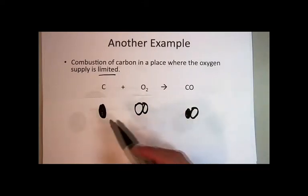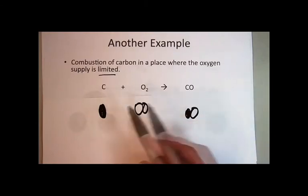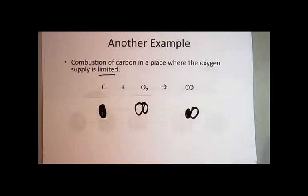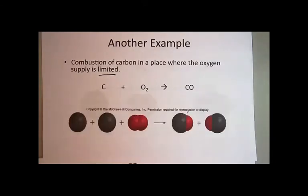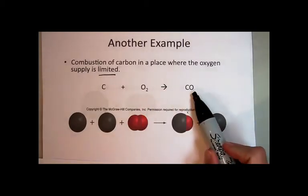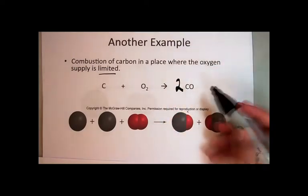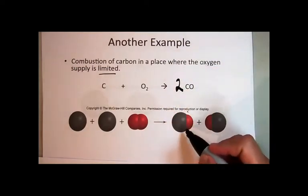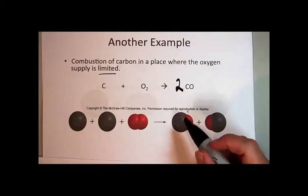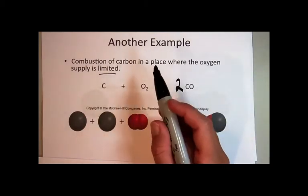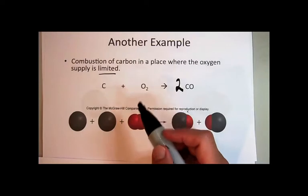And so in order to model this properly, you need to balance it with coefficients, the number out front. So in this type of a chemical equation, really what you're gonna have to do is recognize that because you have the two oxygens here and only one oxygen here, you're gonna have to put a coefficient two, which means I make two carbon monoxide molecules every time I react carbon with oxygen in a limited oxygen supply situation.